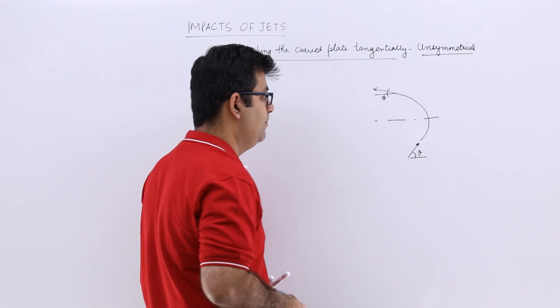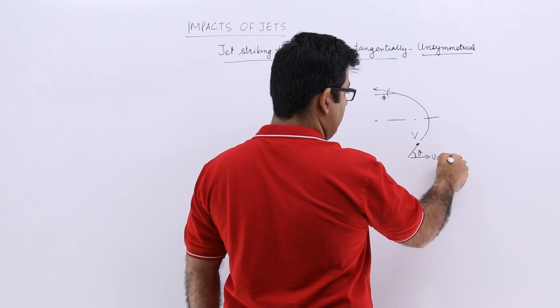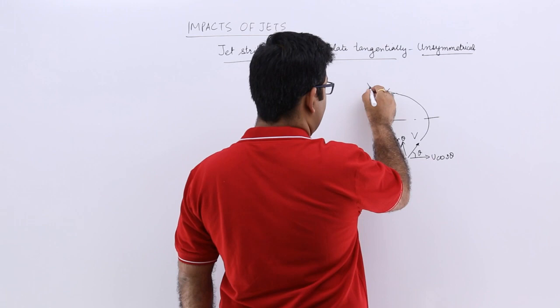You'll have V coming in, so this would be V cos theta and this would be V sin theta, and this would be V cos phi and this would be V sin phi.